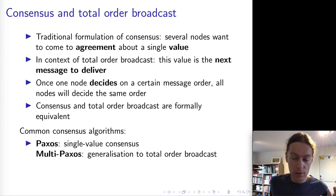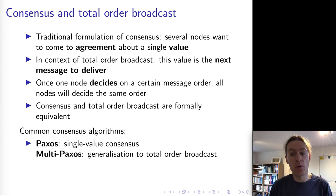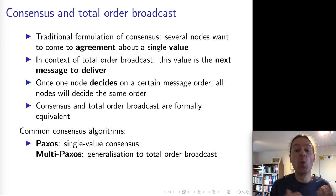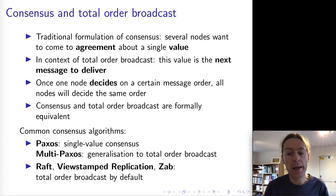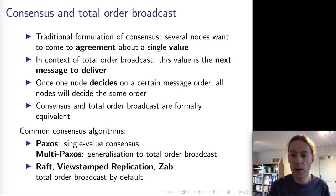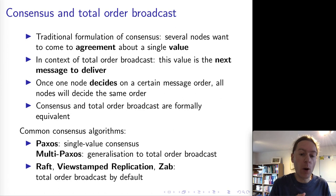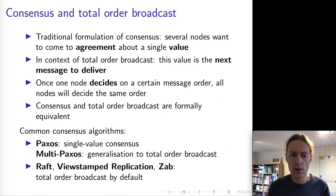The classic consensus algorithm is called Paxos. Paxos only handles consensus on a single value, but there is an extension called Multi-Paxos which provides total order broadcast — agreement on a sequence of values, i.e., a sequence of messages to be delivered. There are also other consensus algorithms including Raft, Viewstamped Replication, and ZooKeeper's ZooKeeper Atomic Broadcast (ZAB), which are designed to provide total order broadcast right out of the box. In this lecture we will look at Raft in more detail, as it is perhaps the easiest to understand, although all of these algorithms are rather complex and subtle.